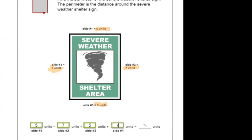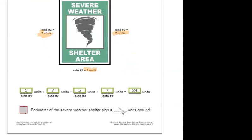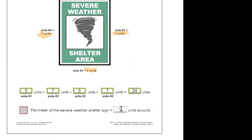Add them all up. Joey, what did you get? 24. There we go — 5 plus 7 is 12, and then plus another 5 plus 7 is another 12, so what number did you get? 24. Good job! Our perimeter is 24. You added up all 4 sides.